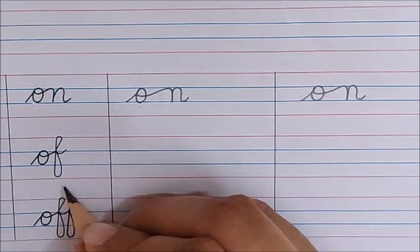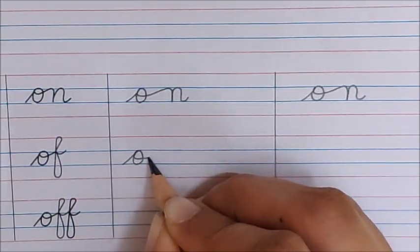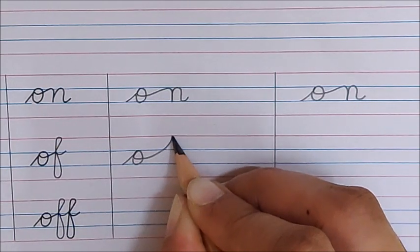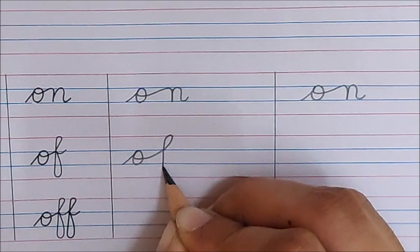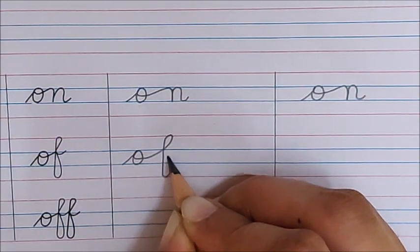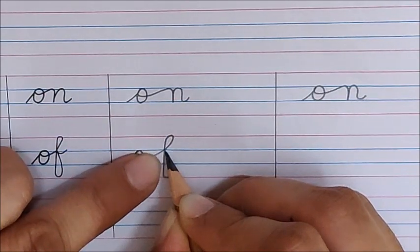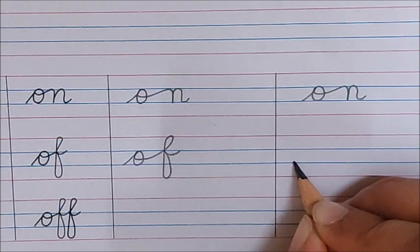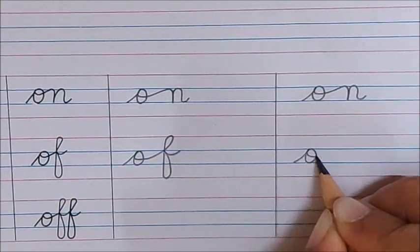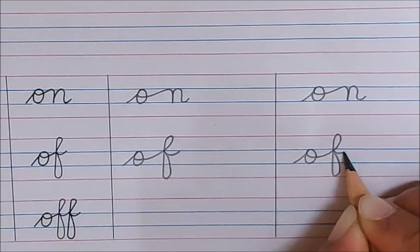Next word is off. O. Look children, how am I making F? Go up. Make a loop behind, piche. Make a straight line. Touch the red line. Go up. Touch this point. And a small smiley. Off. One more time. Off. Off.